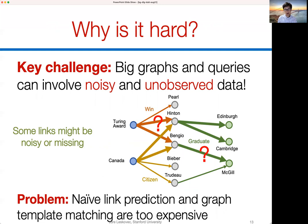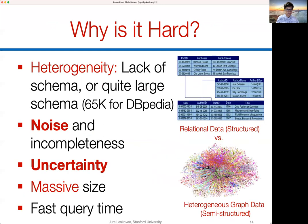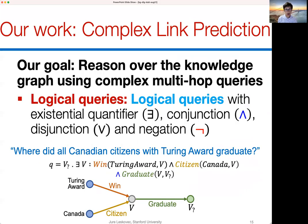One could apply link prediction to fill in the missing knowledge and then apply graph template matching, but if knowledge graphs are very large, template matching becomes exponentially expensive in the size of the query. Other reasons answering such queries is hard include heterogeneity of entity and relation types, noise and incompleteness, uncertainty around relationships, massive graph size, and the requirement for fast query time.